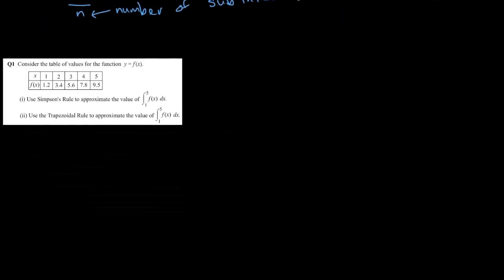So we've got this first question, which says: consider the table of values for the function Y equals F(X). Now you've got all these values, and it says use Simpson's rule to approximate the value of the integral from 1 to 5 of F(X) dx.